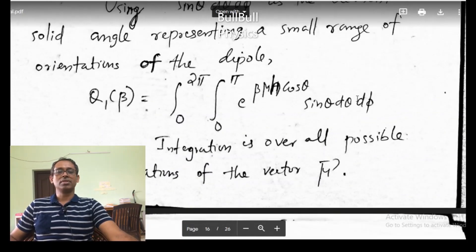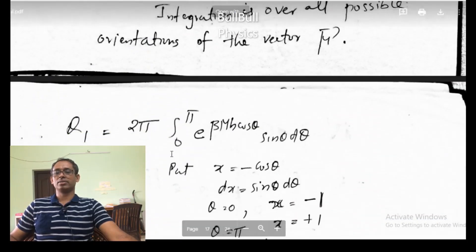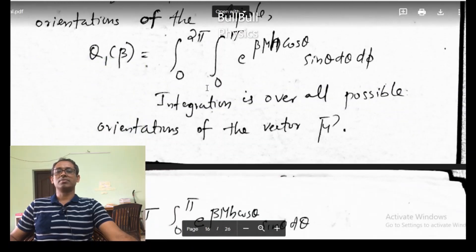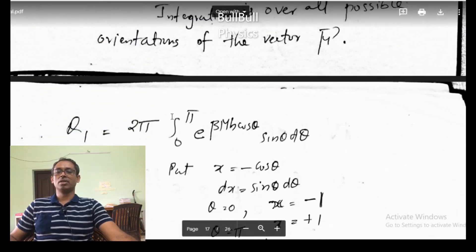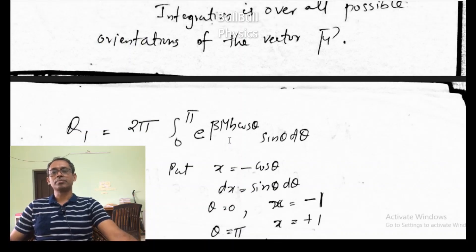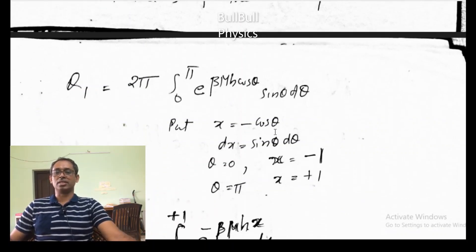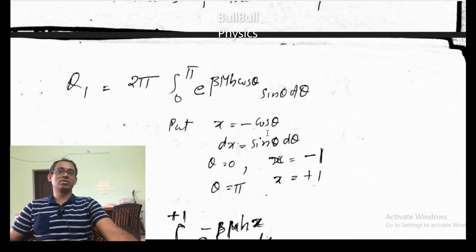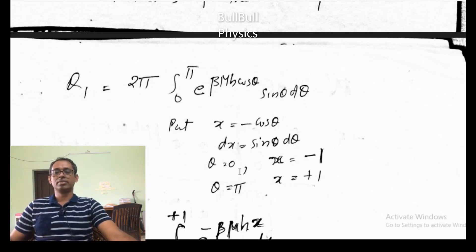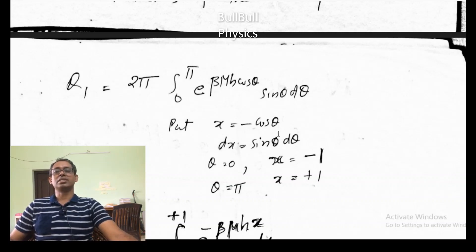The integration with respect to phi is quite easy — you just get 2 pi here. So I have written 2 pi, and then the integration with respect to theta is from 0 to pi of e to the power beta mu H cos theta sin theta d theta. We put x equal to minus cos theta — a change of variable for ease of integration. When x = minus cos theta, then dx = sin theta d theta.